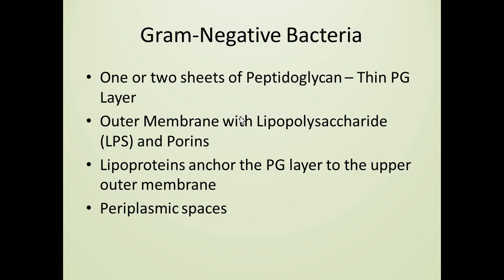Let's compare that to gram-negative bacteria. In gram-negative bacteria, the cell has a relatively thin layer of peptidoglycan. That peptidoglycan layer is sandwiched between the cell membrane and an outer membrane. It is anchored to the outer membrane using lipoproteins, and on either side of the peptidoglycan layer we find periplasmic spaces.